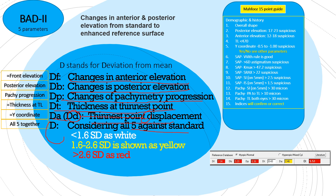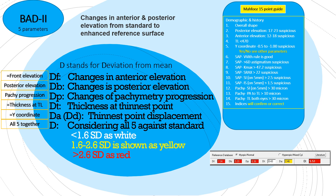Remember: if any of the five parameters is white, it is less than 1.6 standard deviations. Between 1.6 and 2.6 standard deviations it is shown as yellow, and 2.6 or above standard deviations is denoted as red. D here stands for deviation from the mean — standard deviation from the mean.